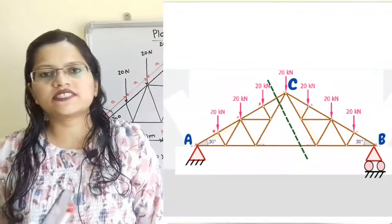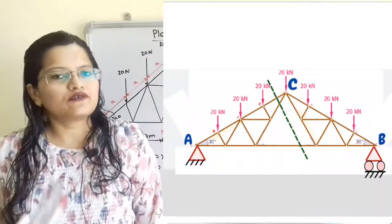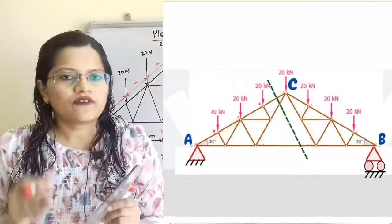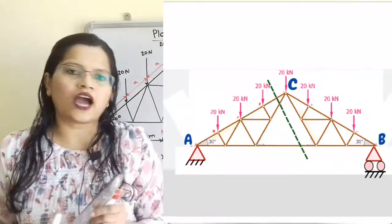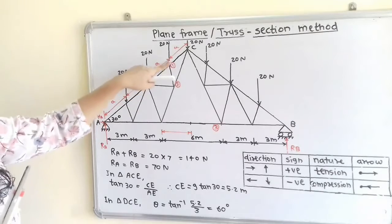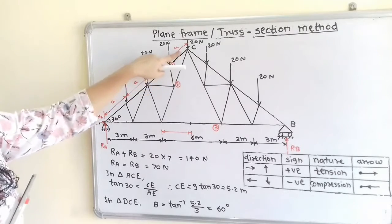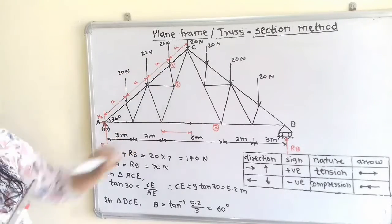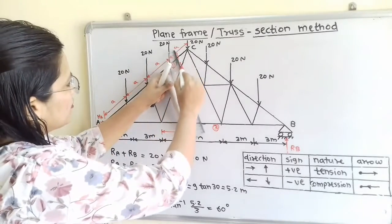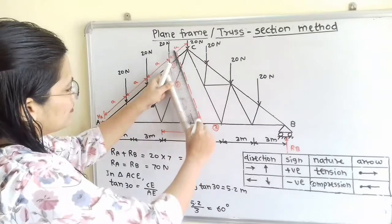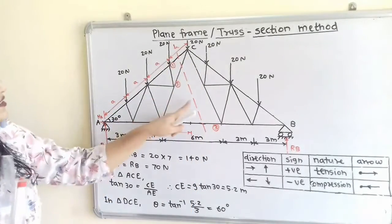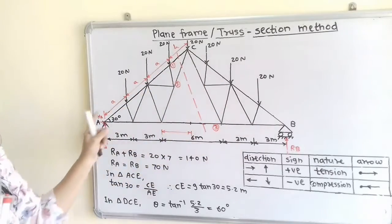We will first draw the section line. We have to draw this line in such a way that it passes through the members for which we need to find the unknown forces. There are three members: member 1, member 2, and member 3. After drawing the section line, it separates the entire truss into two parts — the left-hand side part and the right-hand side part.